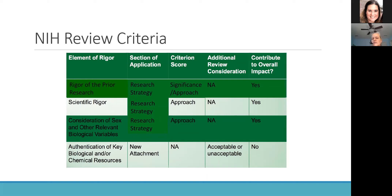In the significance section, reviewers expect to see a discussion of the strengths and weaknesses of the prior supporting research in terms of rigor, and how the specific study is going to fill the gaps in rigor identified in the significance. Once in the approach section, those gaps in rigor can again be mentioned, but the focus shifts to: how does the proposed study address the gaps, and how is the proposed study itself going to meet the guidelines of rigor through careful discussion of analytical methods, statistical approach, and sample size justification.